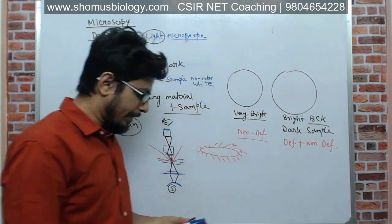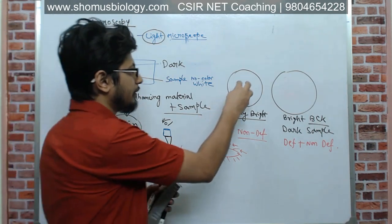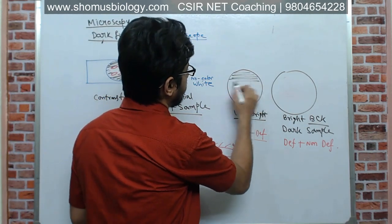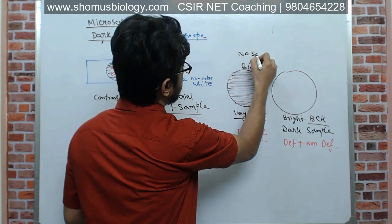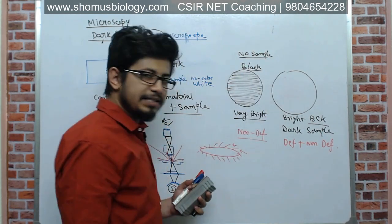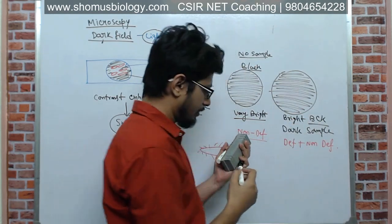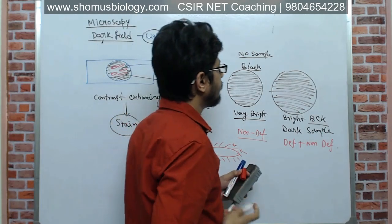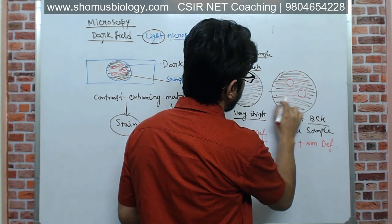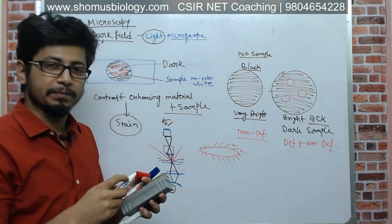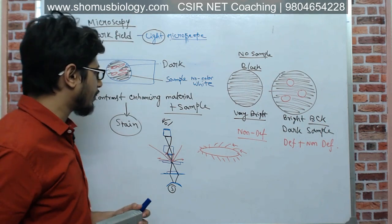In a dark field microscope, if we do not place any sample, the field of view looks exactly black. But when a sample is placed, we see a black background and the region of the sample is visualized clearly. You can clearly see the extremities of the specimen quite well with the help of dark field microscopy. The question is: how exactly does dark field microscopy work?